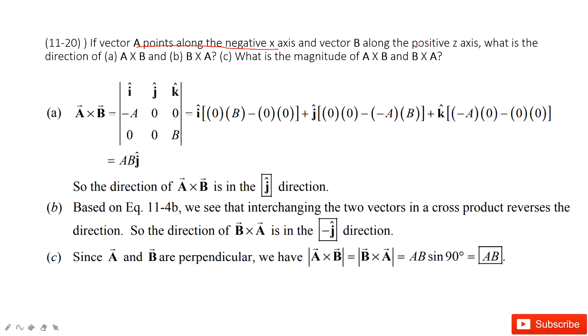B is along the positive z-axis. So B is B at the k component, and the x component and j component are zero. And then we do this operation. We get the final answer is AB in the j direction.